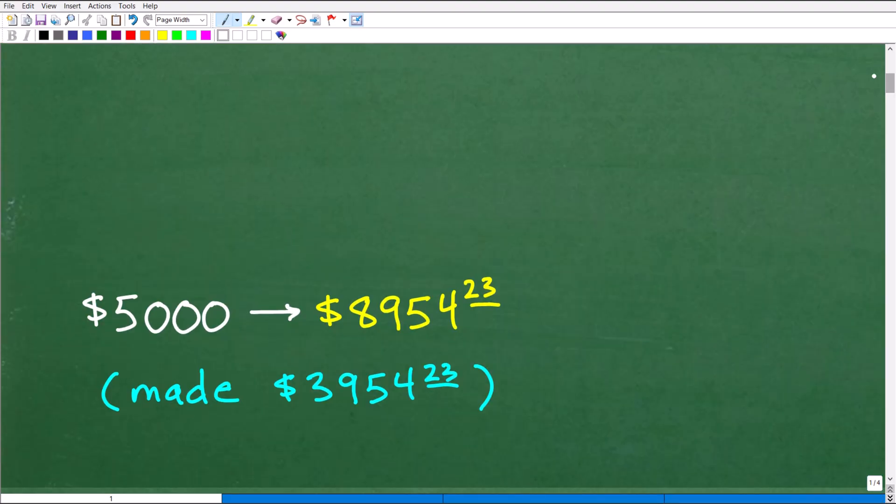If you invested $5,000 for 10 years at 6% annual compound interest, how much money did you earn on that investment? Well, here is the answer. So our $5,000 grew into $8,954.23.